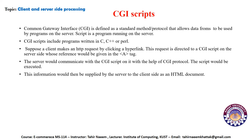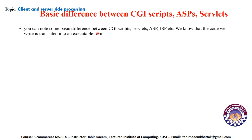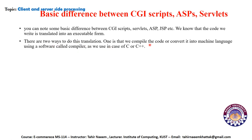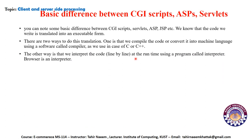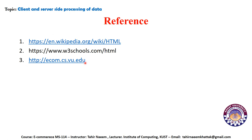The basic difference between CGI scripts, ASP, and servlets relates to how code is translated into executable form. There are two ways: compiling the code into machine language using a compiler, as used in C++, or interpreting the code line by line at runtime using an interpreter — a browser is a typical example of an interpreter. Compiled code is usually faster than interpreted code. Technologies like ASP, PHP, and ColdFusion interpret the code, except the newer ASP.NET where code is compiled.